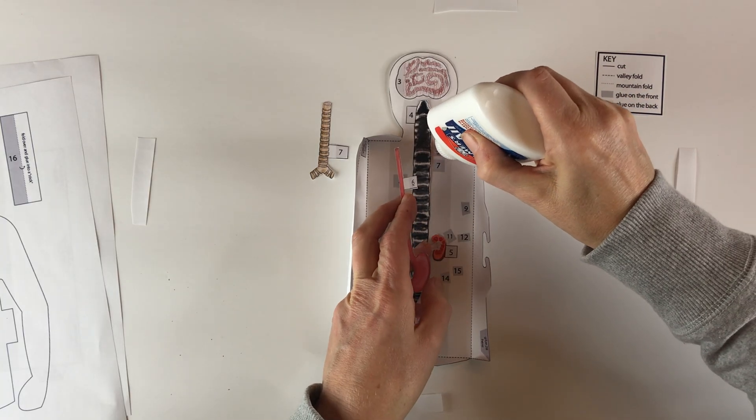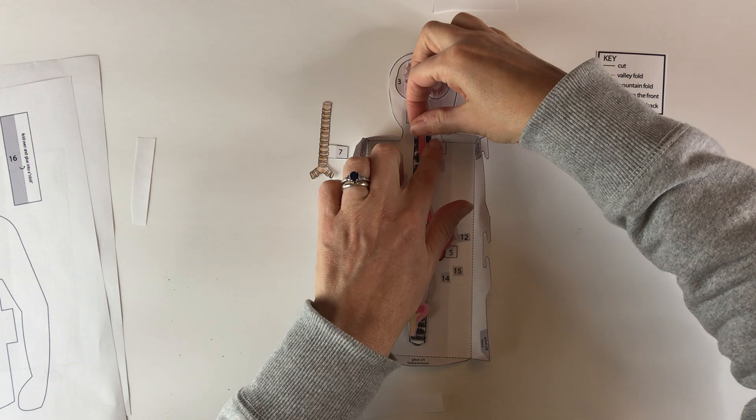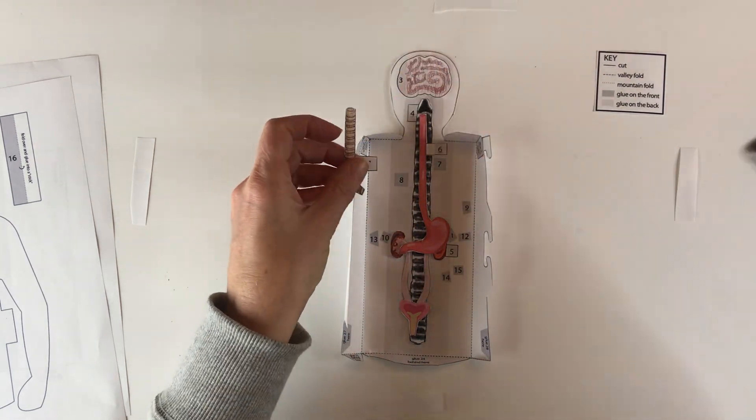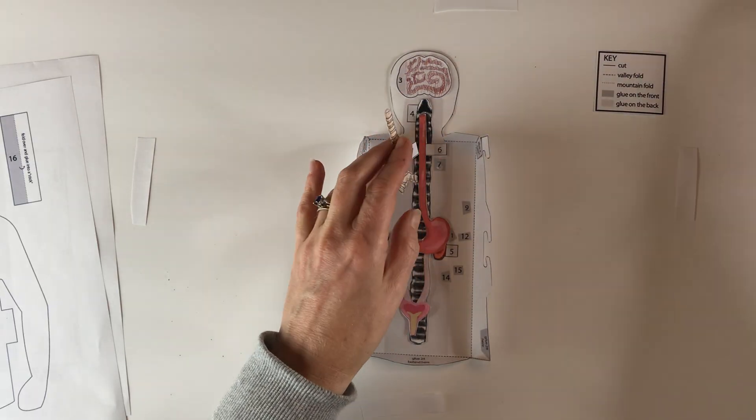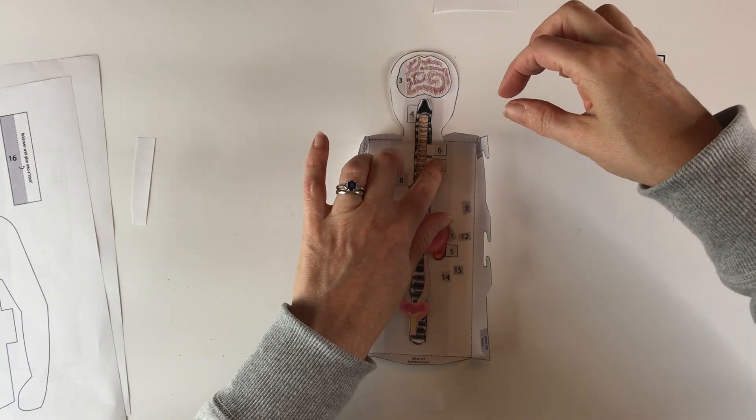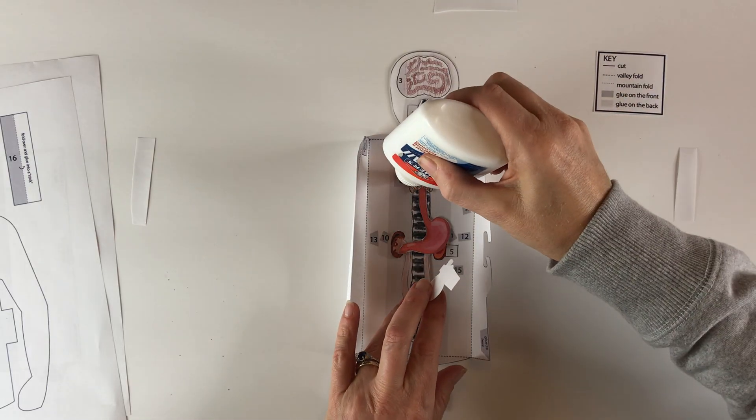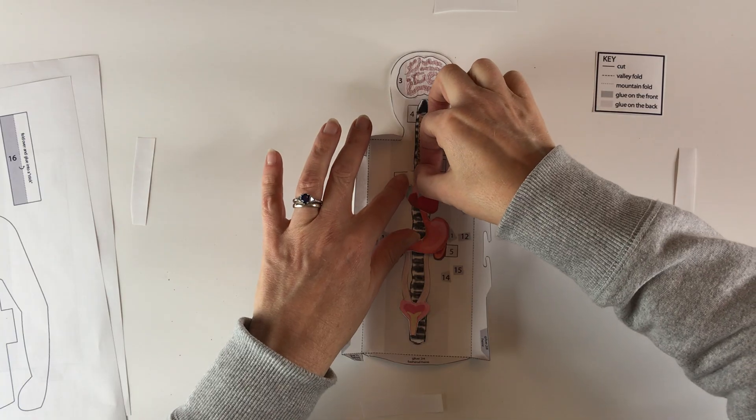Here is the esophagus and stomach. Next up is the trachea. And you can label these on the back as you go, but you'll see there's also a worksheet included that can be put on the back of the model at the end with the organs numbered and their functions labeled.